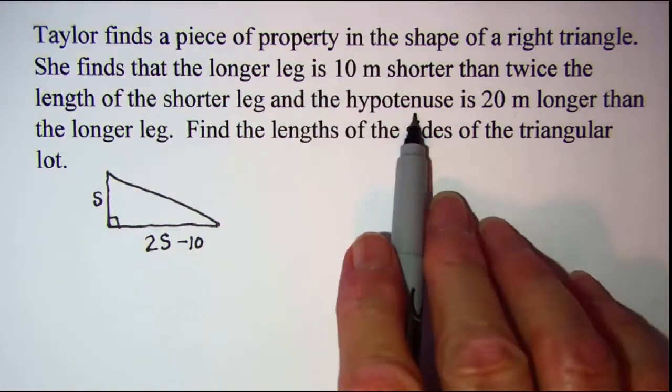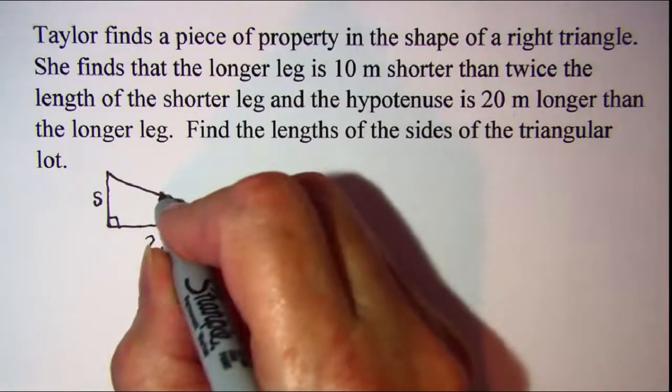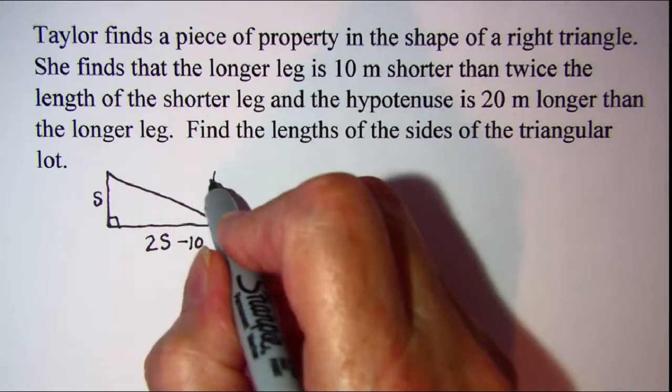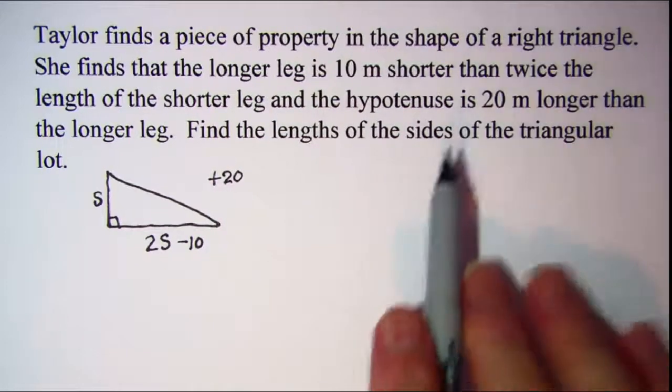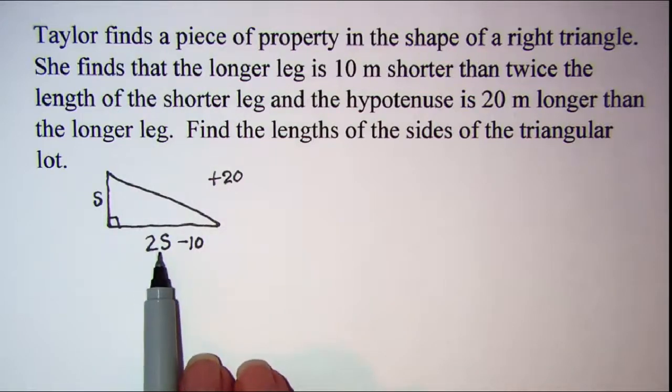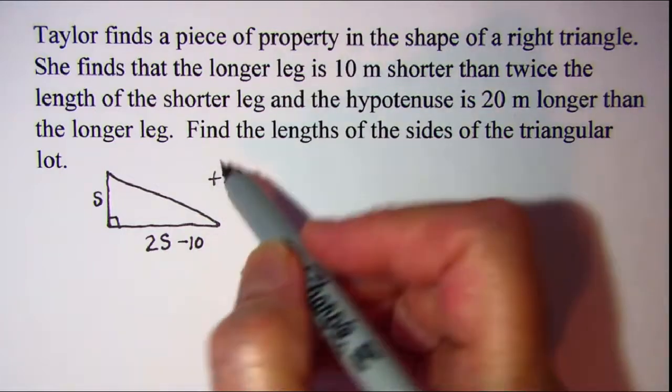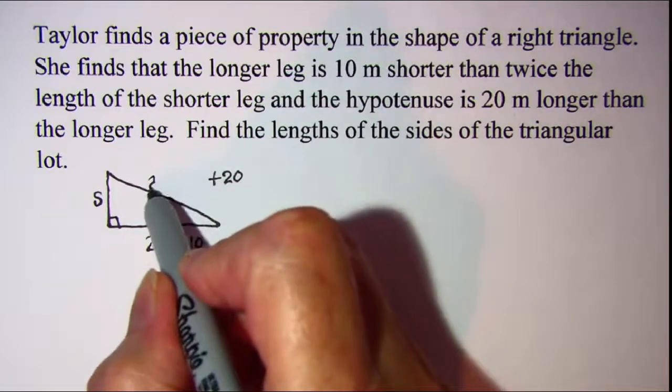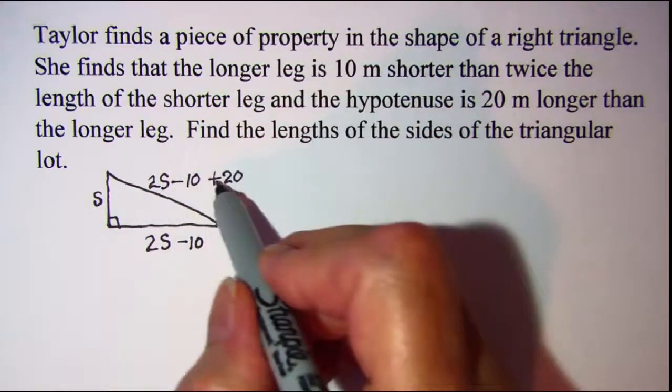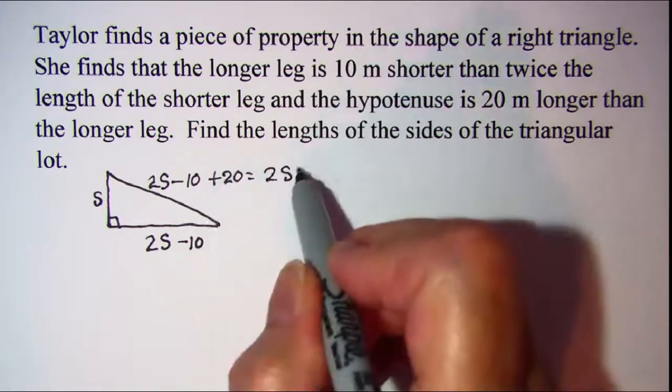And the hypotenuse is 20 longer than, so the hypotenuse, which is across from the right angle, is 20 longer than, so I'm going to add 20 onto something, 20 longer than the longer leg. Now the longer leg is this expression right here, so I'll be adding 20 onto 2s minus 10. And this expression simplifies to 2s plus 10.